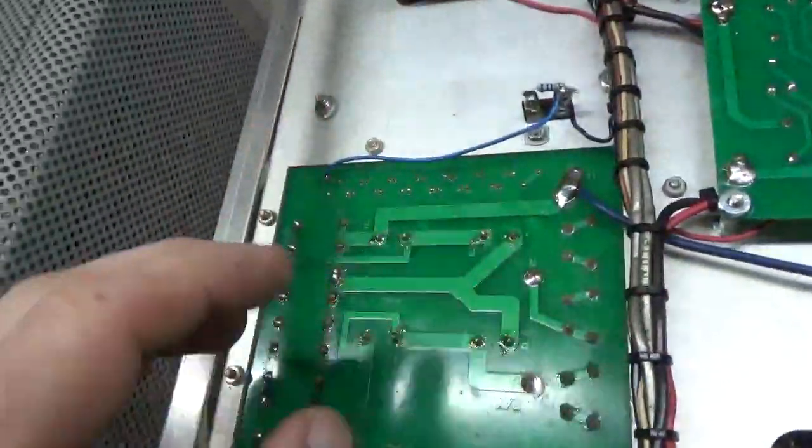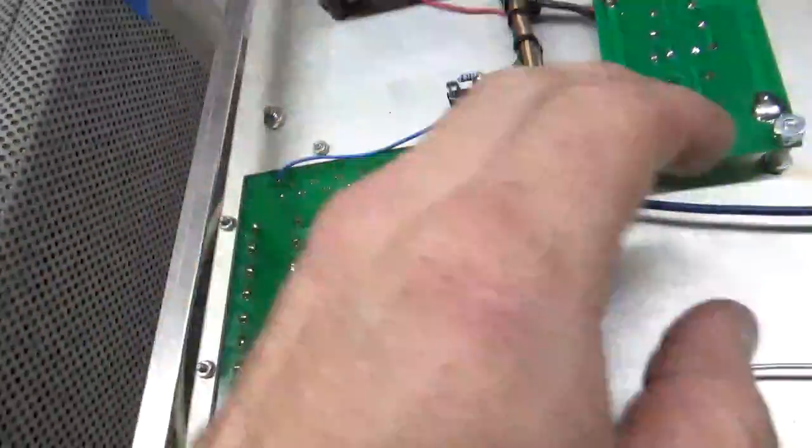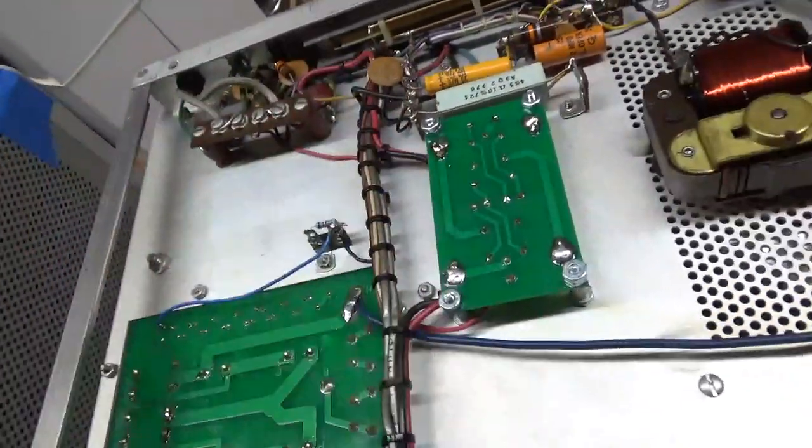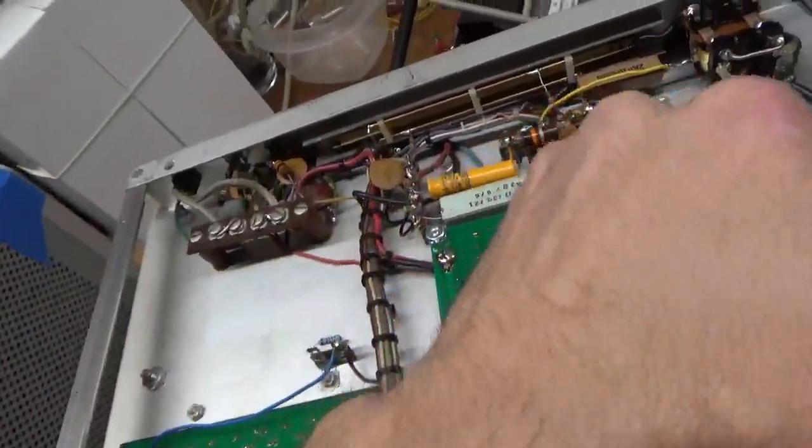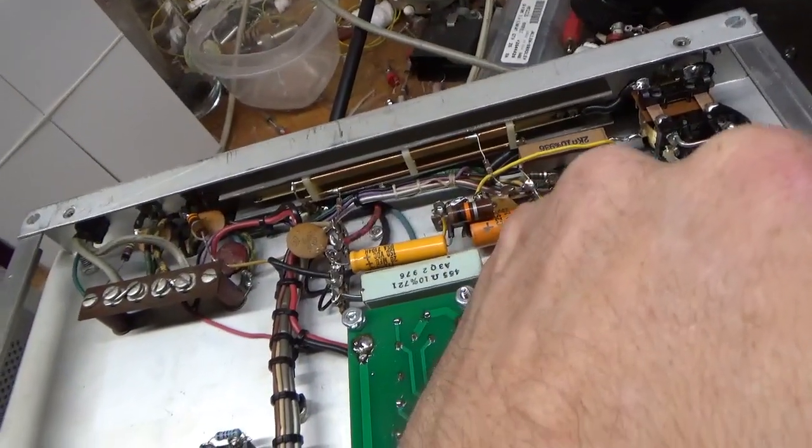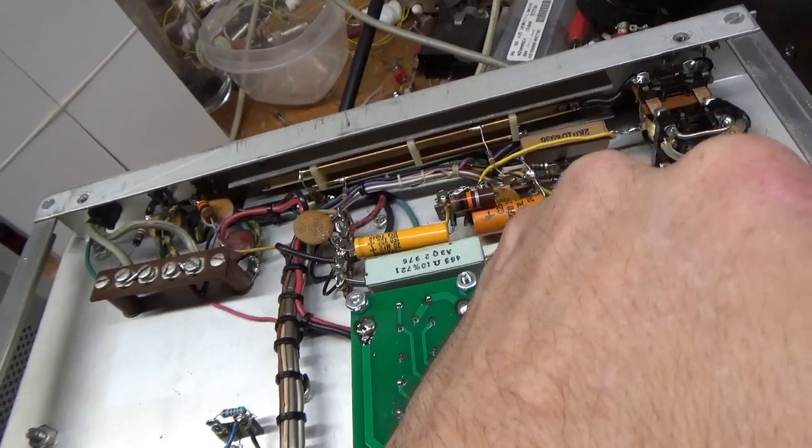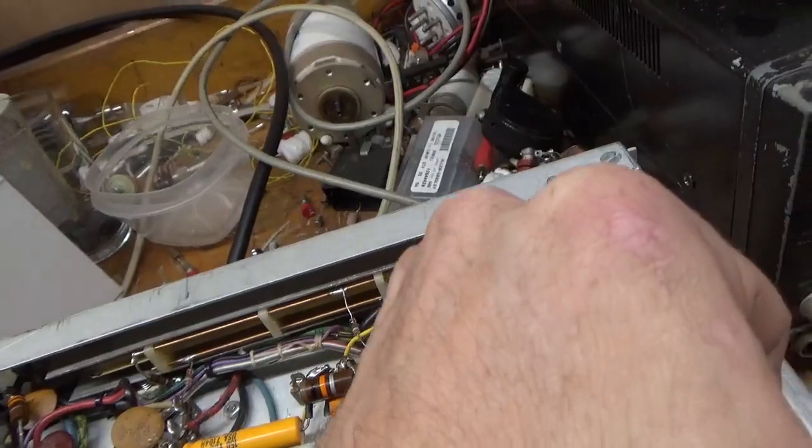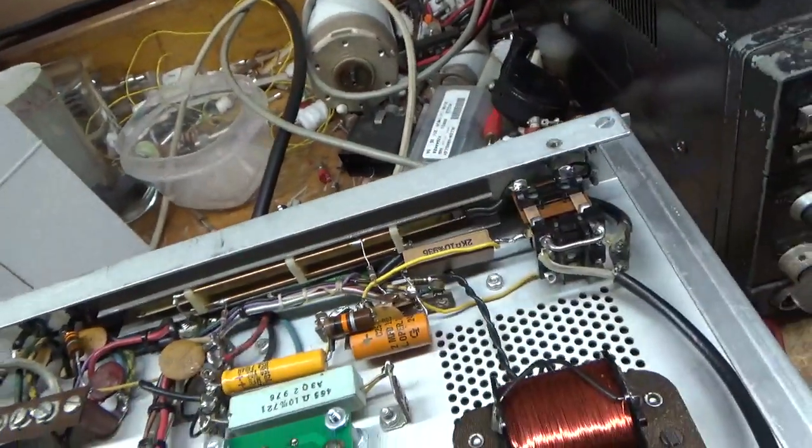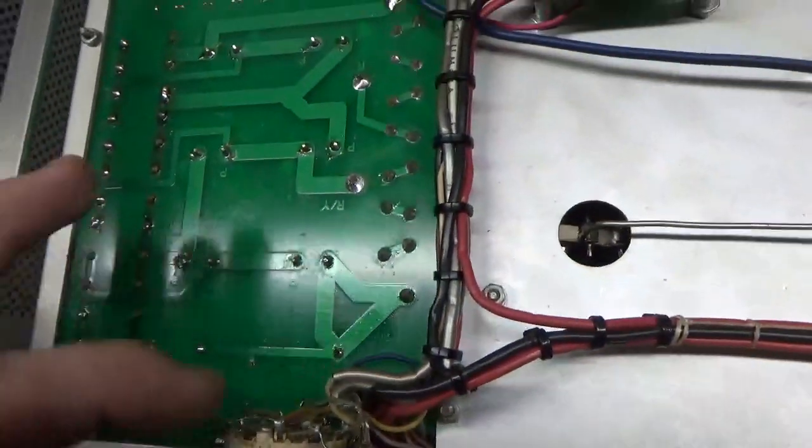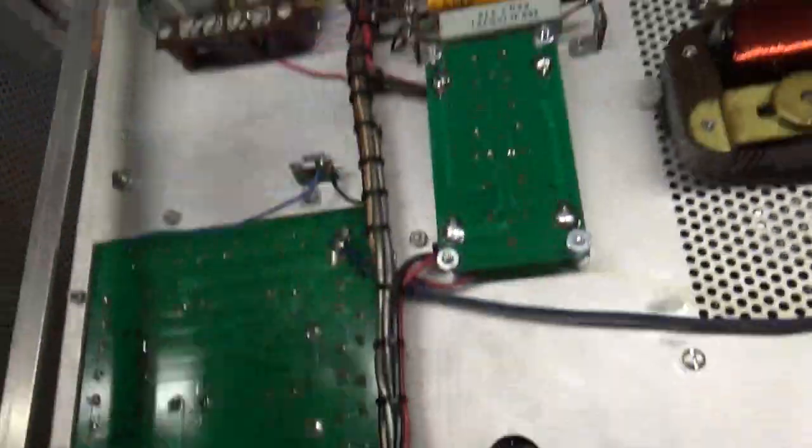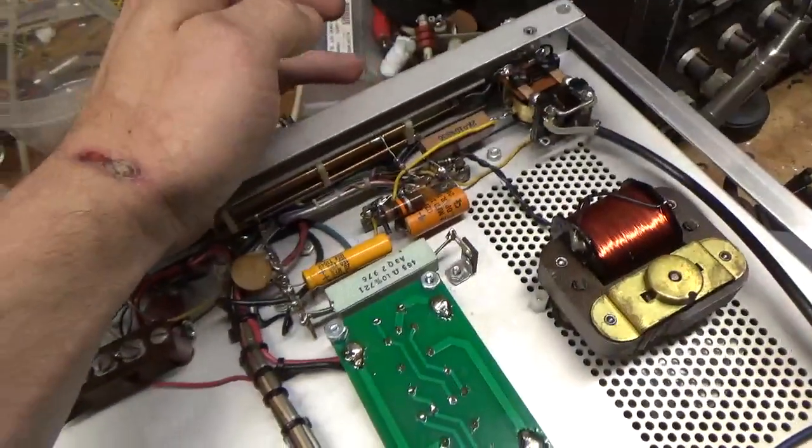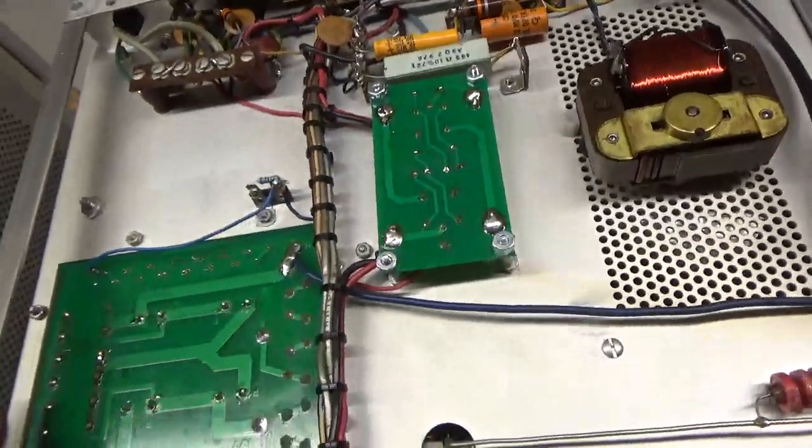A lot of bad solder joints over here, so I touched those all up. I had a couple bad ones over here I touched up. I'm waiting on that cap. When it gets here, I will change it. I touched up the solder joint over here. And I cleaned the rotary switch with Deoxit Gold. I cleaned the input rotary switch with Deoxit Gold, and the output band switch with Deoxit Gold.